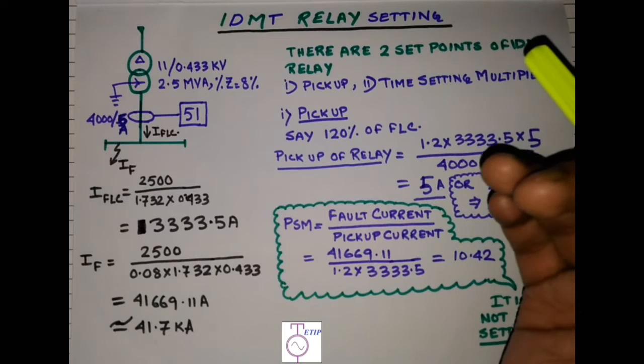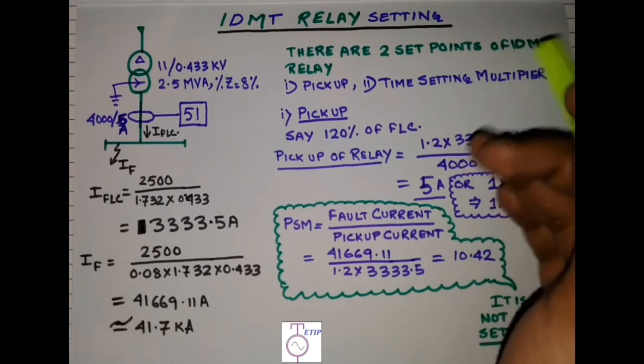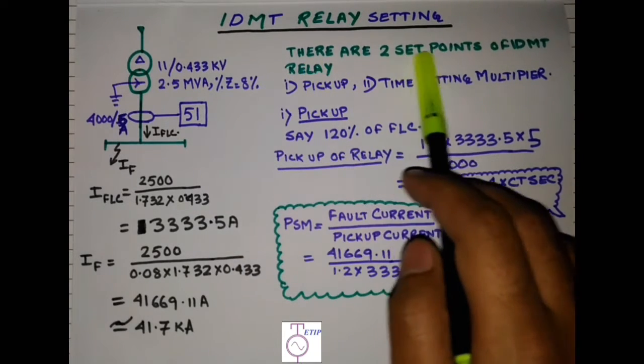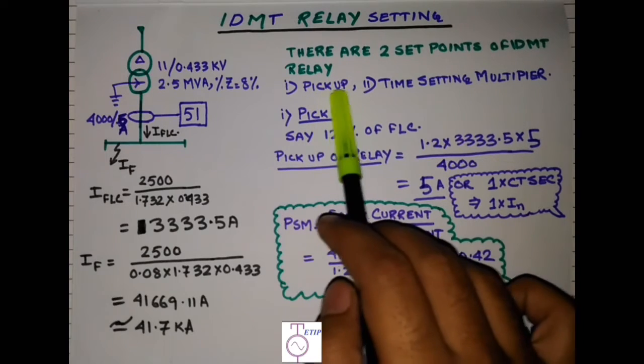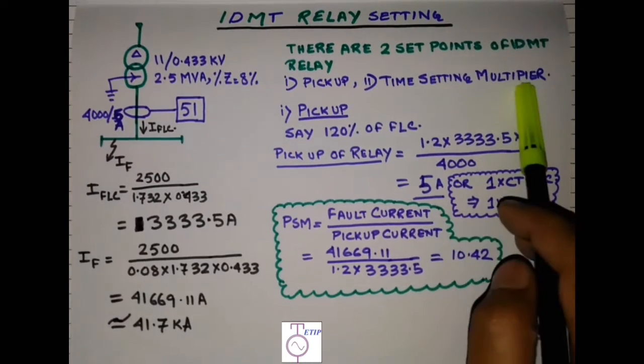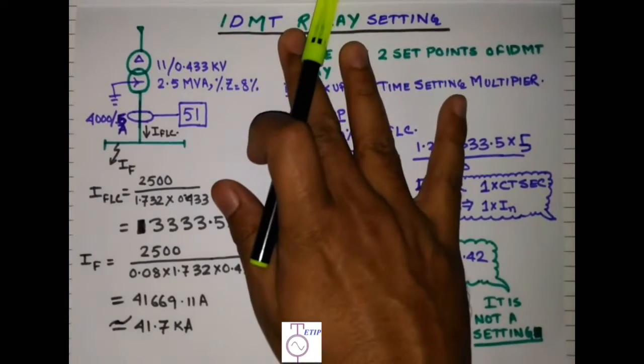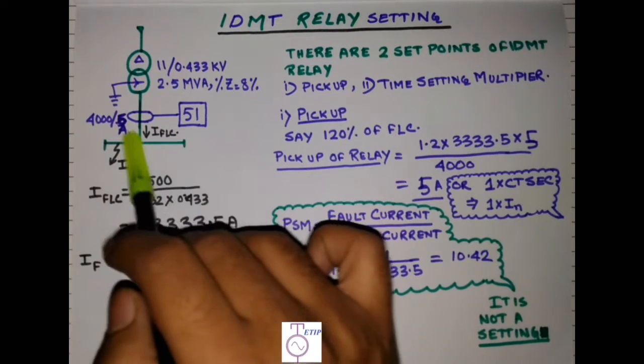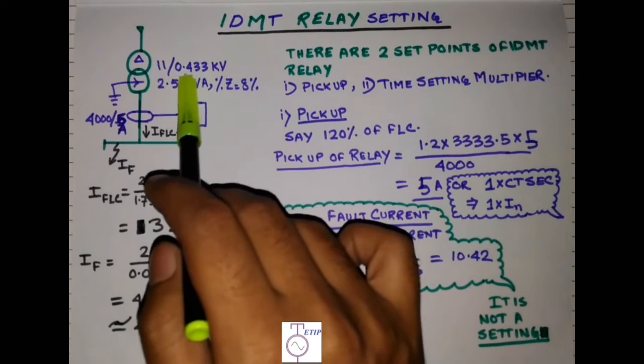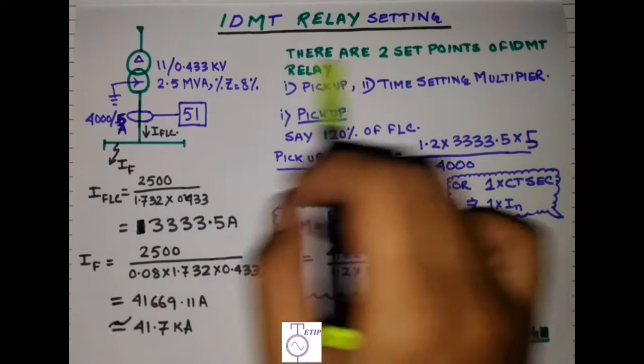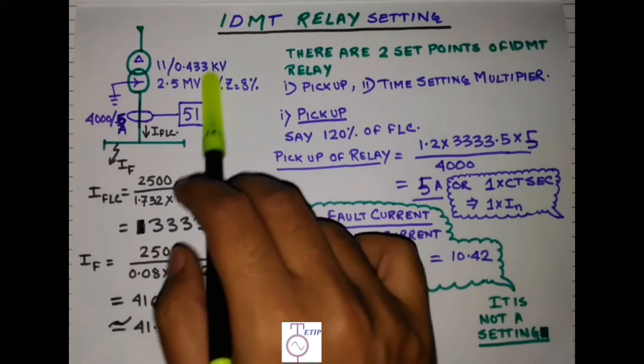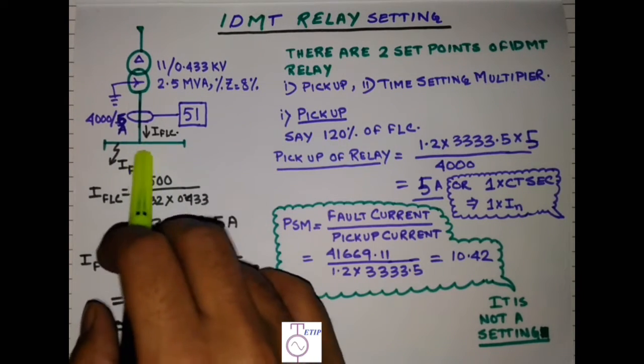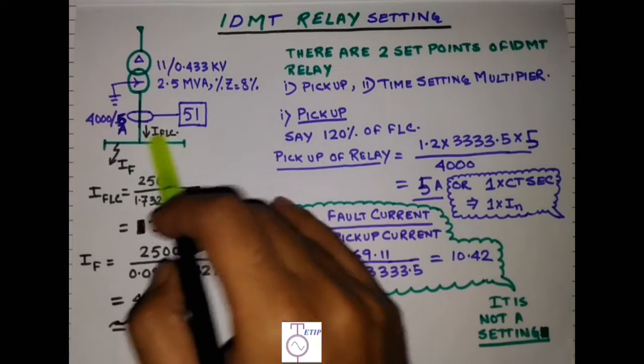Now let us see how we will calculate the settings for an IDMT relay. Remember there are two set points of an IDMT relay: one is pickup and the second one is time setting multiplier or TSM. Let us see an example. This is a transformer 11/0.433 kV, 2.5 MVA with a percentage impedance of 8%. Now this transformer is feeding a switchboard from where several loads are connected.